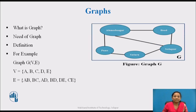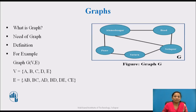In this graph, the cities connected to each other are represented in graph G, where the nodes represent cities and the edges connecting them represent the routes between cities. A graph G is defined as an ordered set of vertices and edges, where V represents the set of vertices and E represents the edges that connect the vertices.